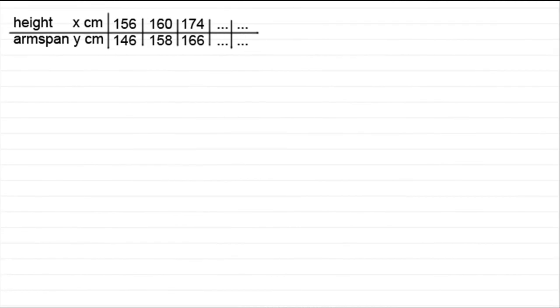Hi, welcome to this tutorial in my series on correlation and regression. Now you should be familiar with scatter diagrams, and what I've got up here is, for instance, a table which gives the height in centimeters - we'll call it x - and your arm span y in centimeters.